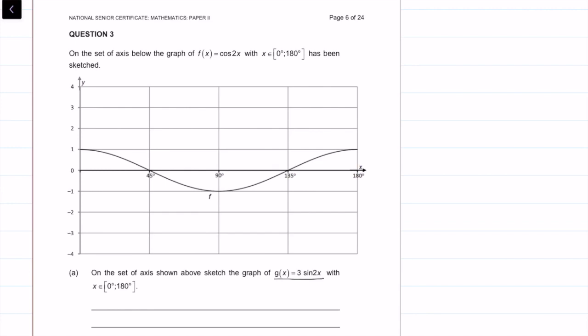So before we can sketch this, let us first understand what is happening. We start off with our normal sine graph. It goes from 90, 180, 270, 360, and our normal sine graph looks something like that. That is sine of x.